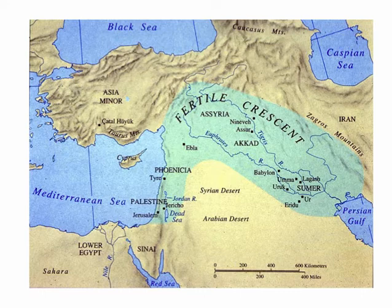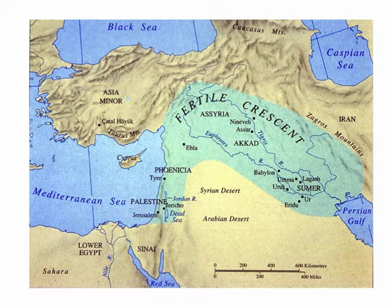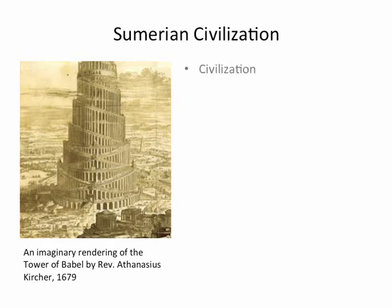Mesopotamia had three major regions. The early period of Mesopotamian history was dominated by the region of Sumer in the southeast, and the city-states of Sumer such as Ur, Uruk, and Babylon. Later periods saw other regions like Akkad in central Mesopotamia and Assyria in northwest Mesopotamia come to the forefront. But this early period was dominated by the Sumerians, and they were the ones to inaugurate civilization in Mesopotamia.